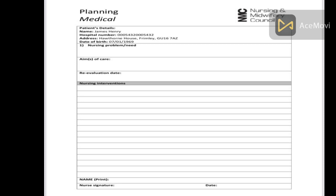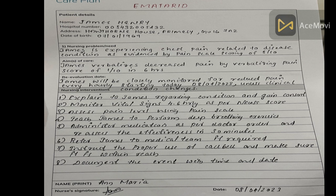You can find the patient's name on the care plan — the patient name must be included. The patient name is James. The nursing problem is: James is experiencing chest pain related to disease condition as evidenced by a pain scale score of 5 out of 10.